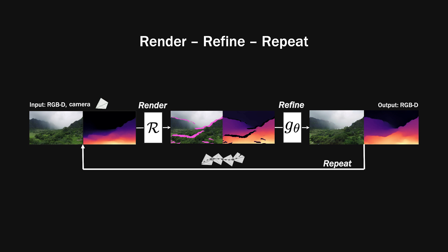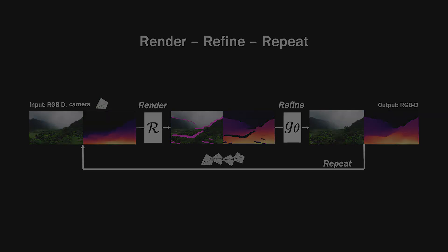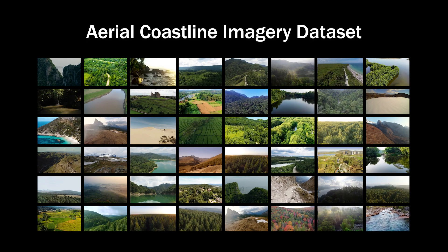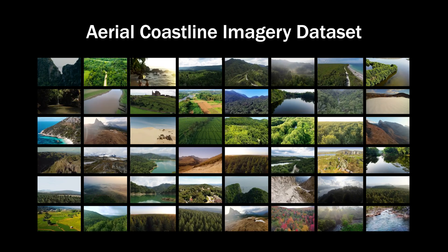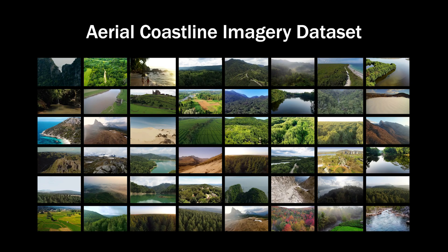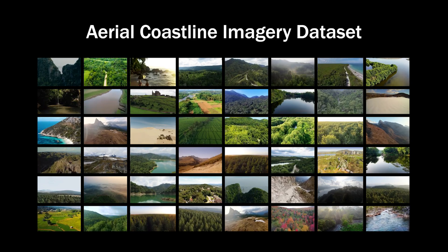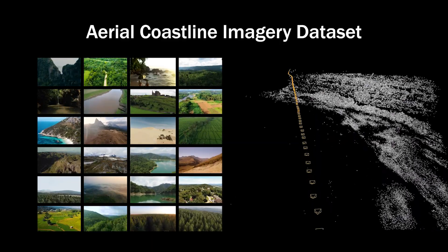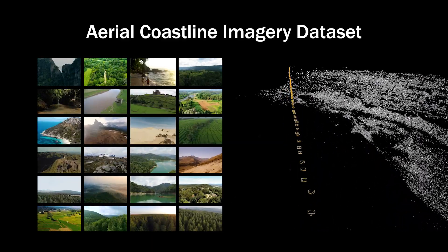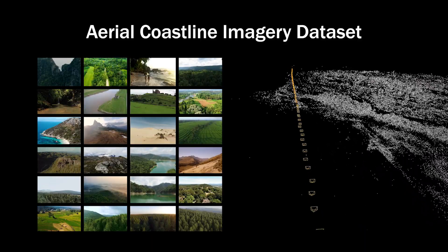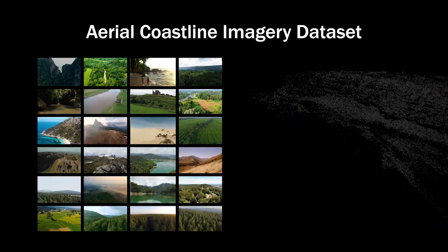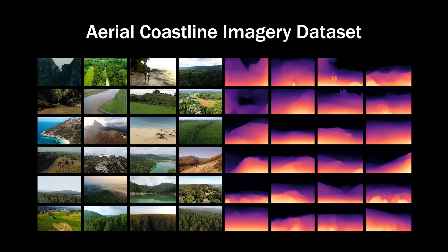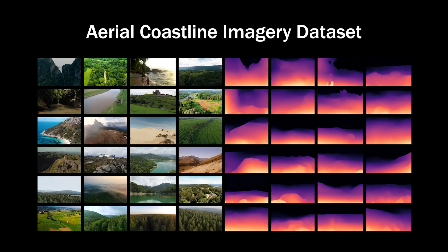At test time, we use the MIDAS system of Lasinger et al. to obtain the initial disparity map to kickstart the process. To train our model, we introduce the aerial coastline imagery dataset, a new dataset of aerial footage of coastline and natural scenes from over 700 videos spanning 2 million frames. We identified such videos and processed them with structure from motion to get camera poses and 3D point clouds like the one we see here. We also use the MIDAS system to obtain dense disparity maps.